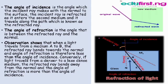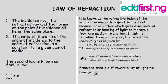When we talk about laws of refraction, there are two laws. The first law states that the incident ray, the refracted ray, and the normal at the point of incidence all lie on the same plane. The second law states that the ratio of the sine of the angle of incidence to the sine of the angle of refraction is constant for a given pair of media.